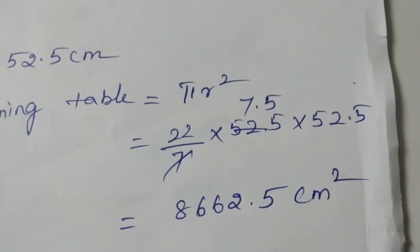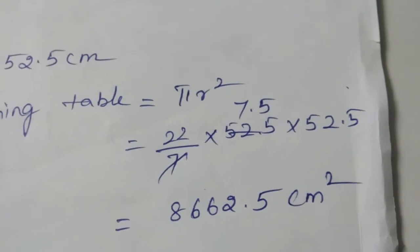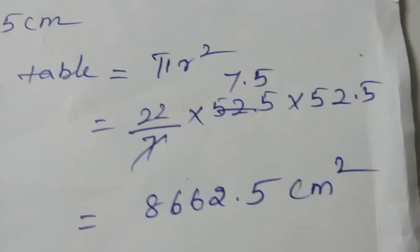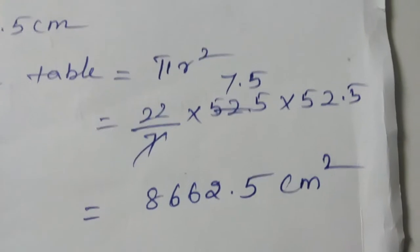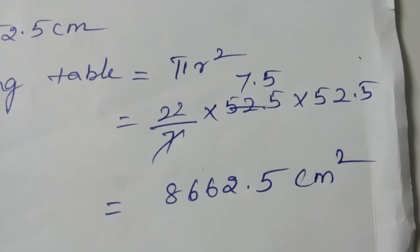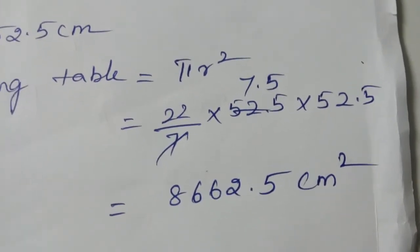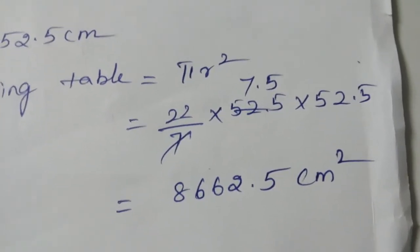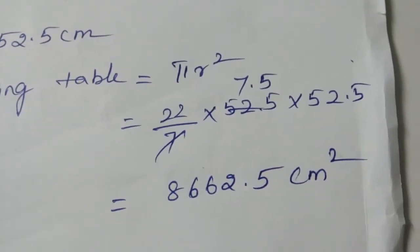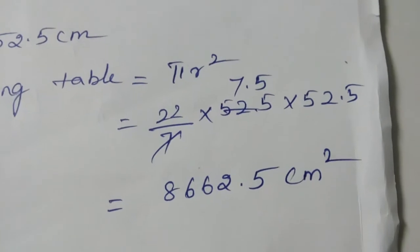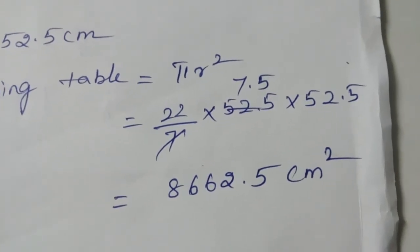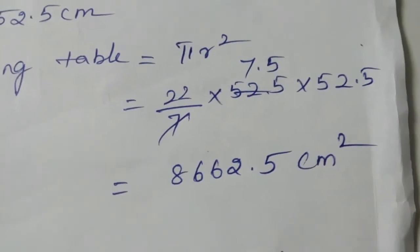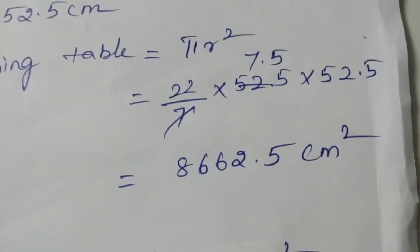The value of pi used here is 22 by 7, so it is 22 by 7 into 52.5 into 52.5. We cancel 7 with 52.5 to get 7.5, then multiply 22 into 7.5 into 52.5 to get 8662.5 centimeters squared. Always remember, area must be written in square centimeters.